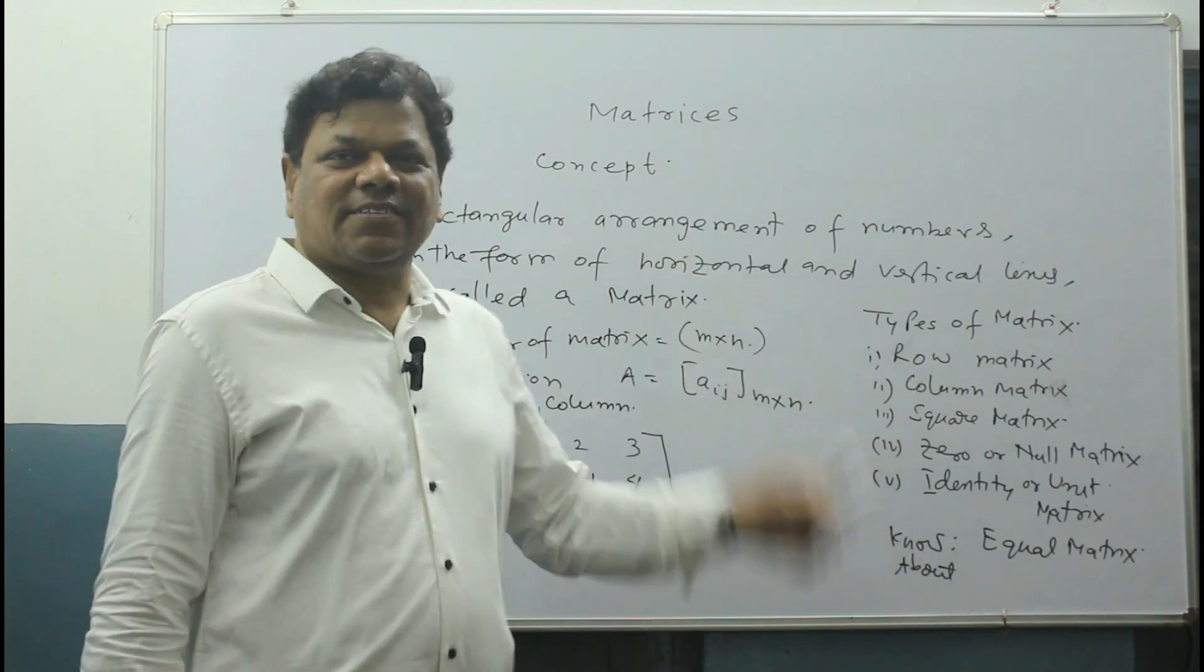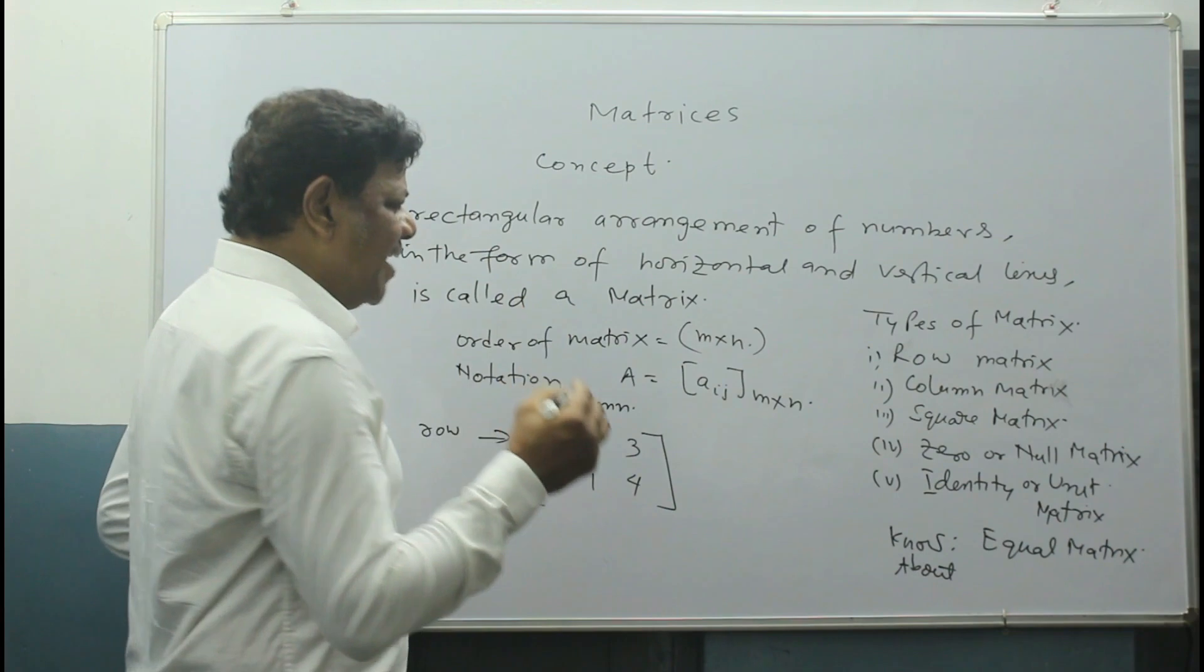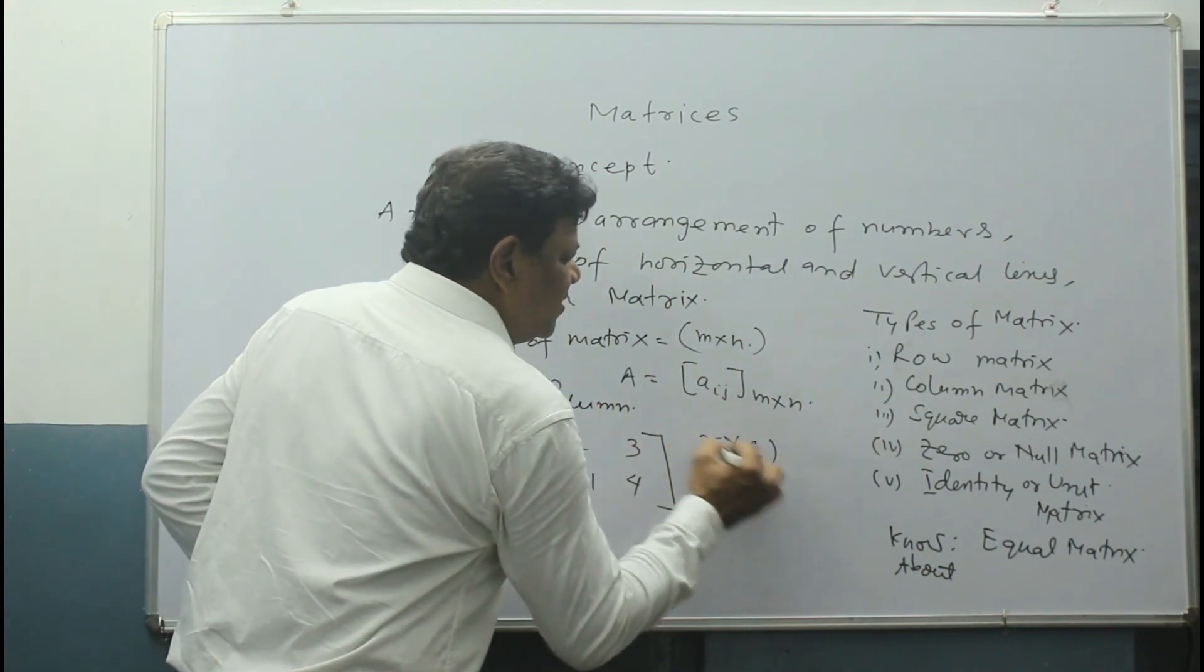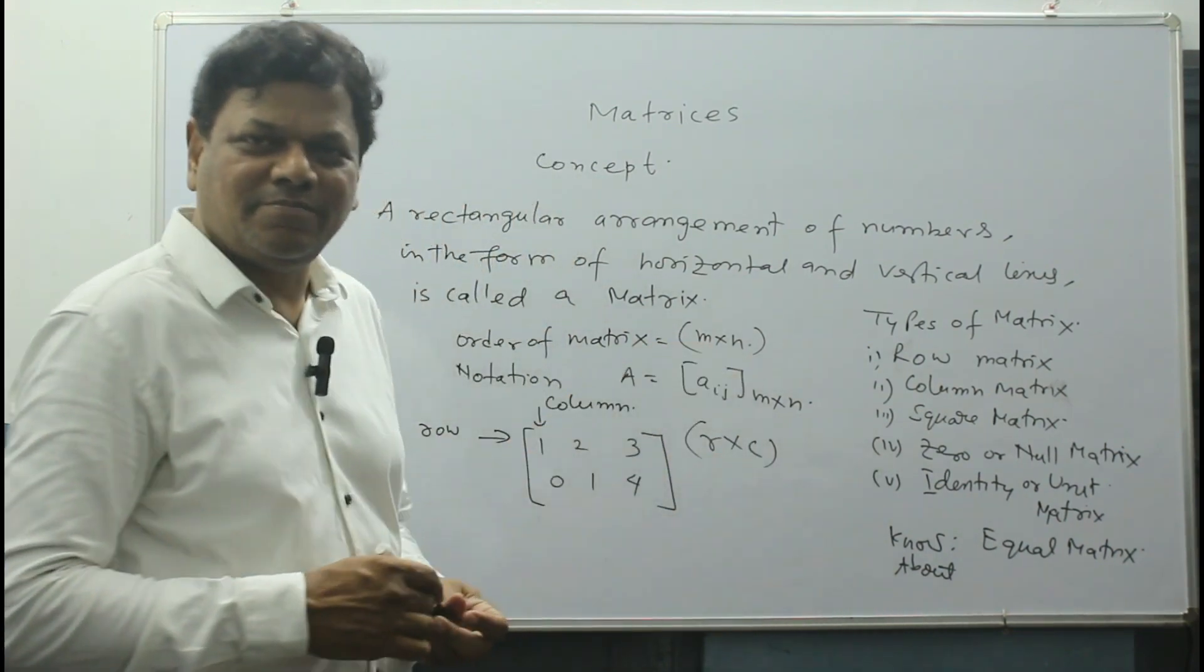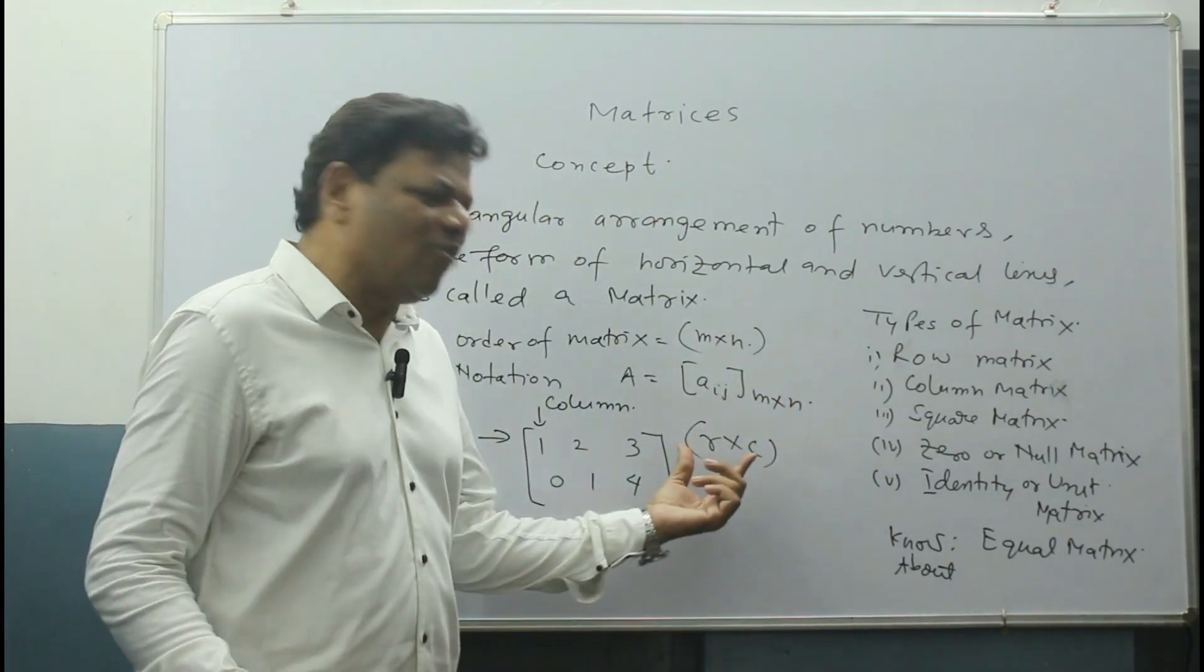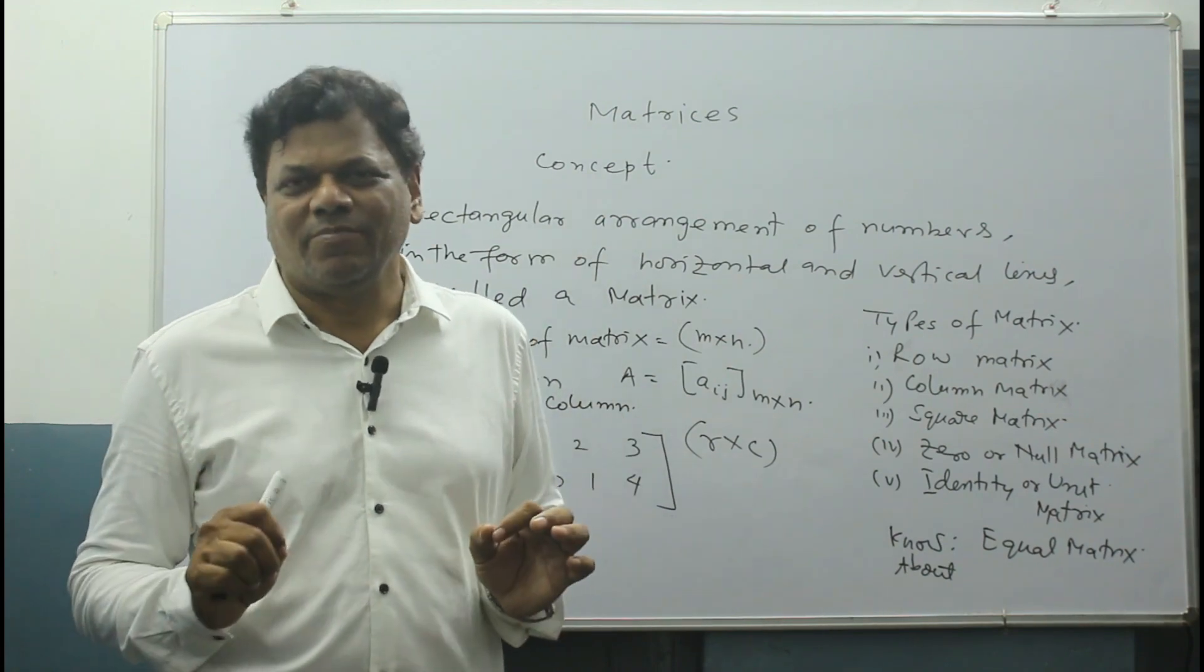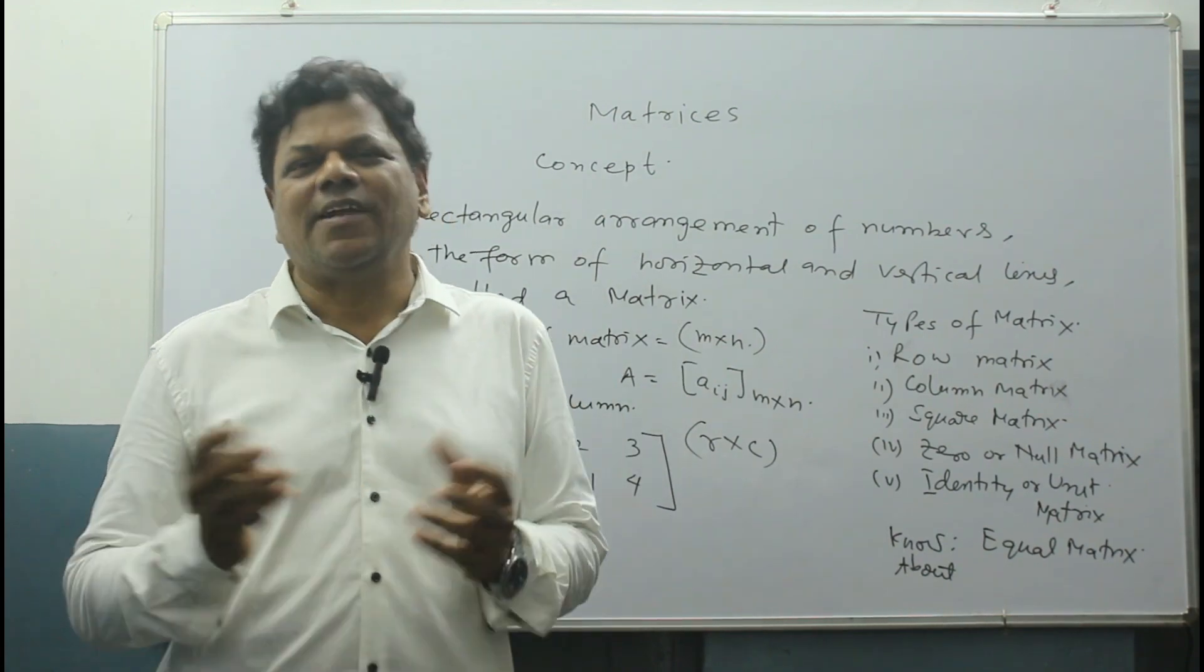Order of matrix. In the book it's generally written M×N, but I don't write M×N. I write R×C, easy to understand—row, column. In the book MN is given, okay remember that, but I always say RC. Why RC? RC is convenient for me. R stands for row, C stands for column.